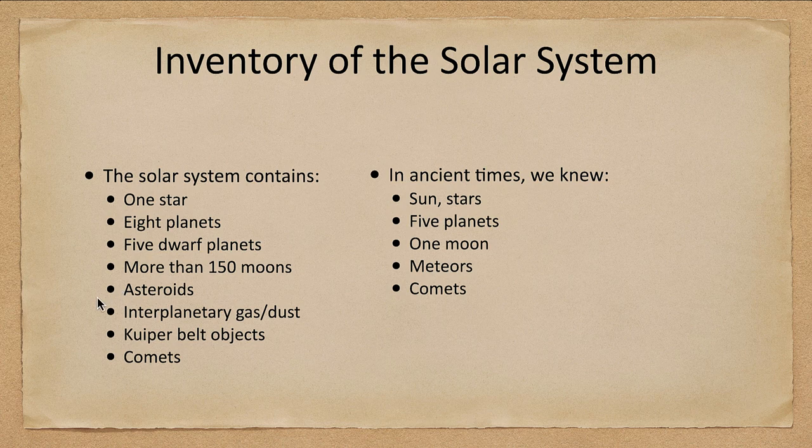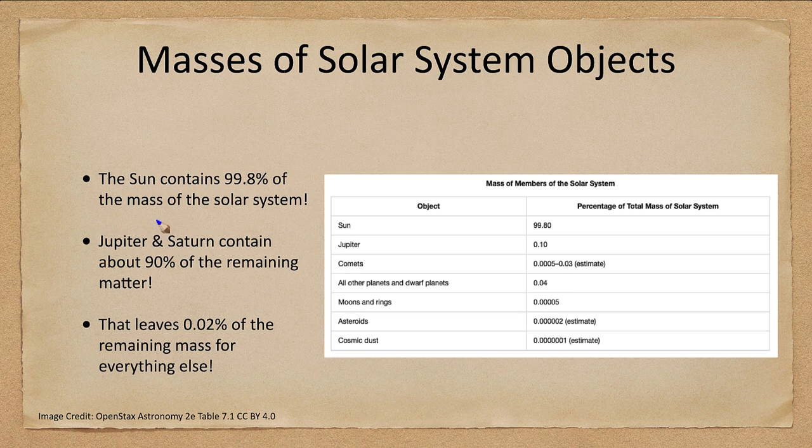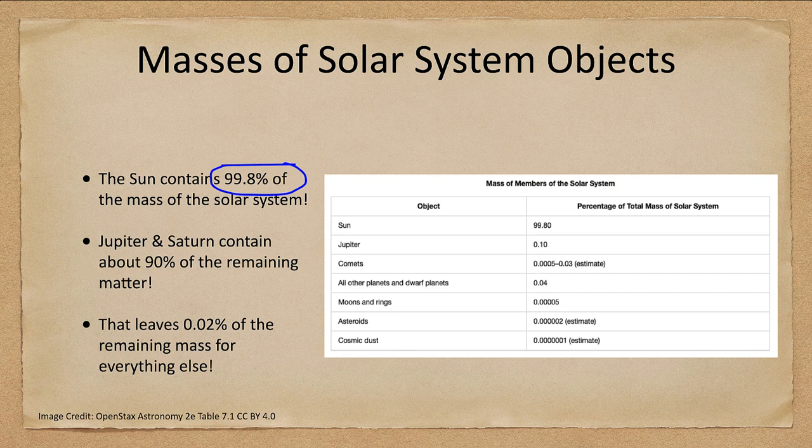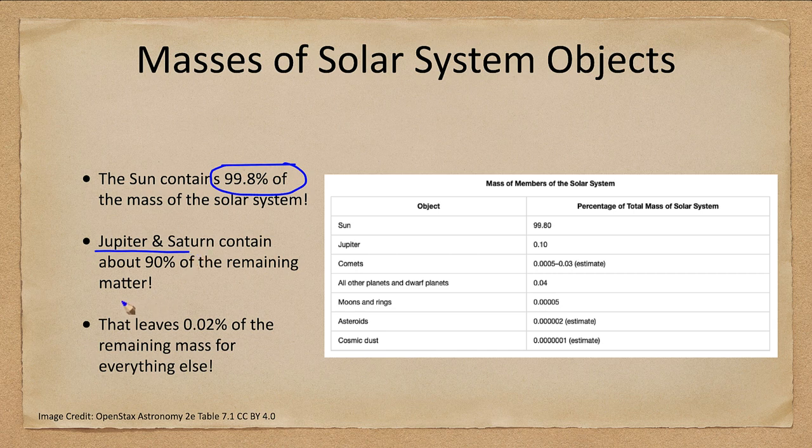Now what about their masses? Where is all the mass in the solar system? Well the sun contains 99.8 percent of the mass of the solar system. So it is the solar system. If we look at Jupiter and Saturn they contain about 90 percent of the remaining matter.